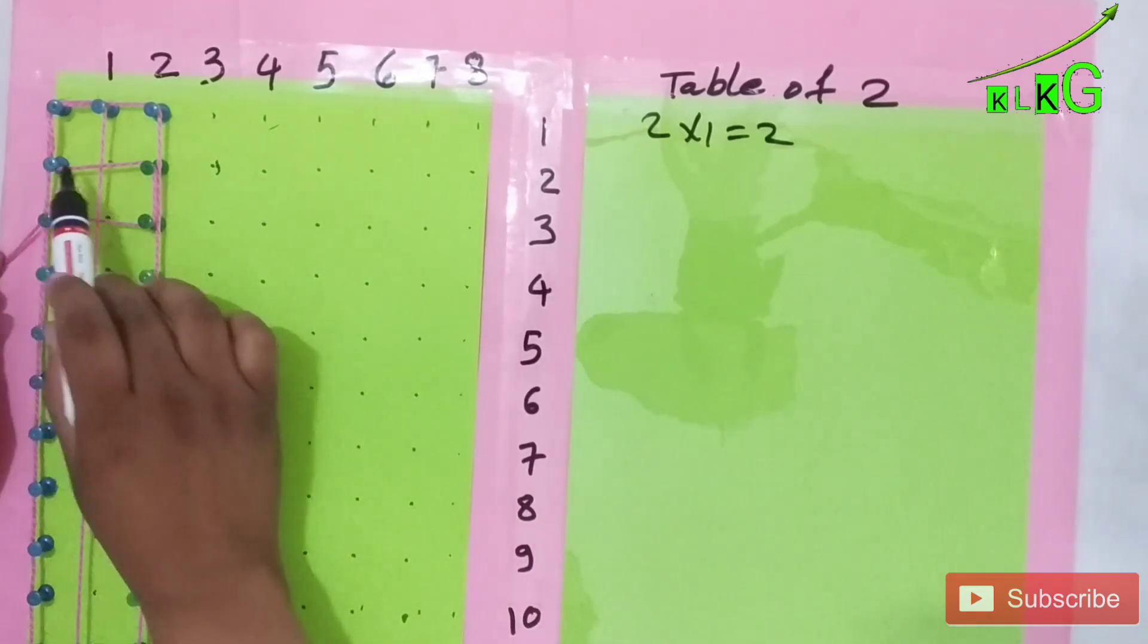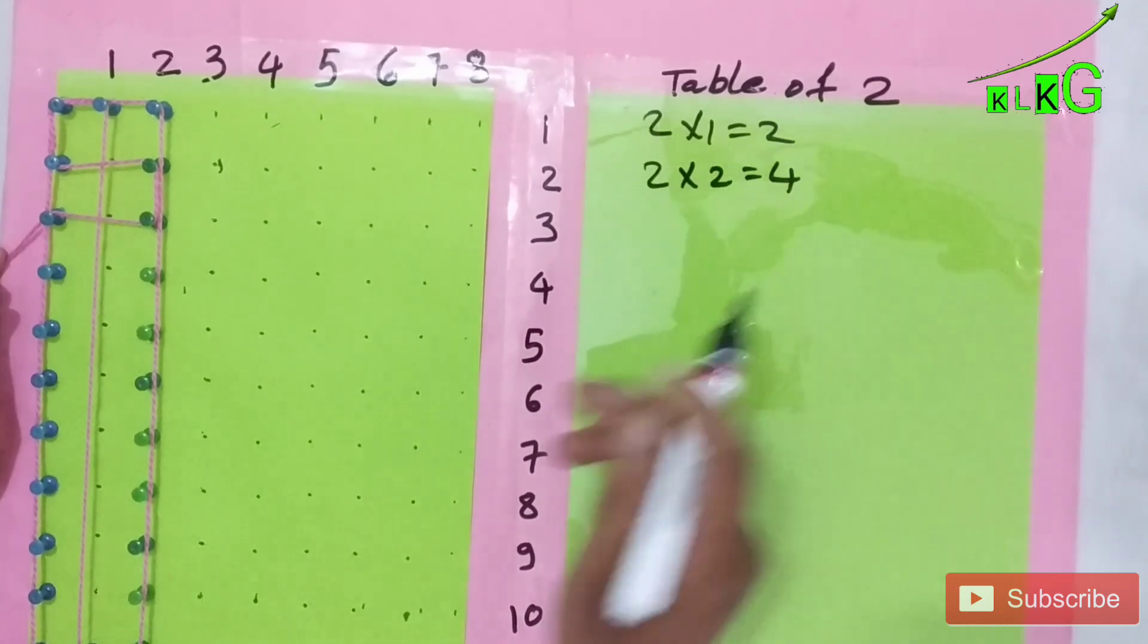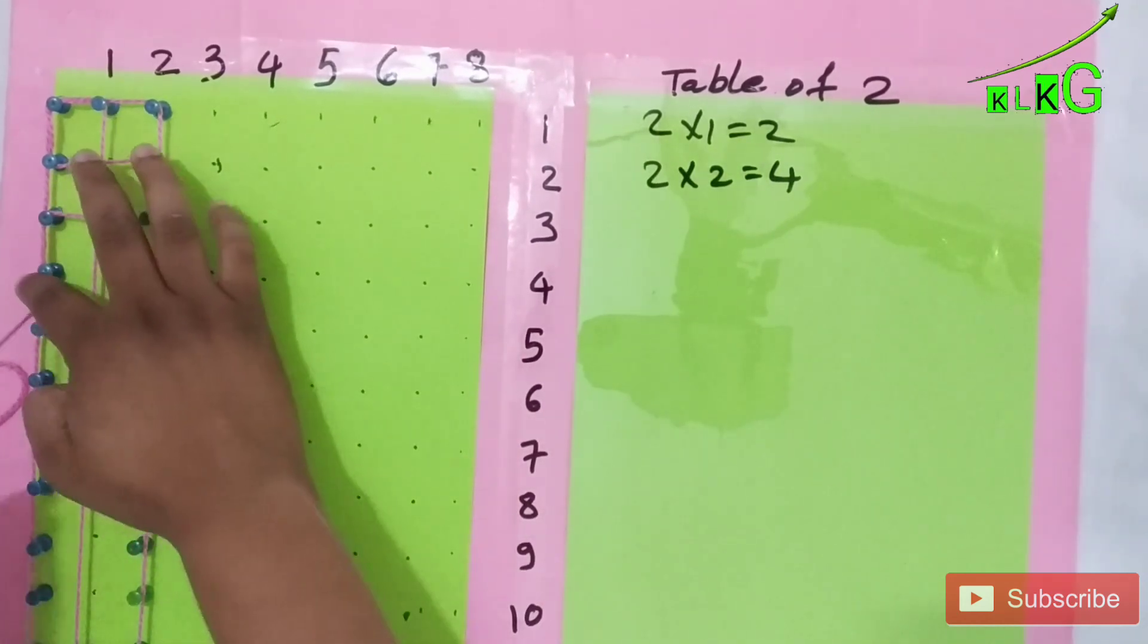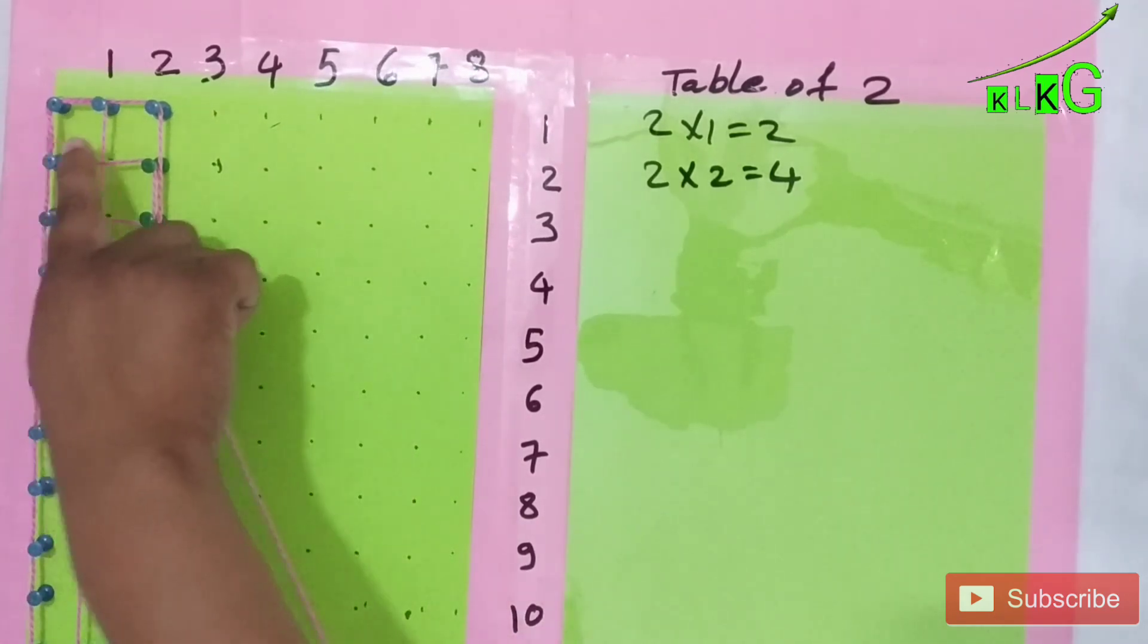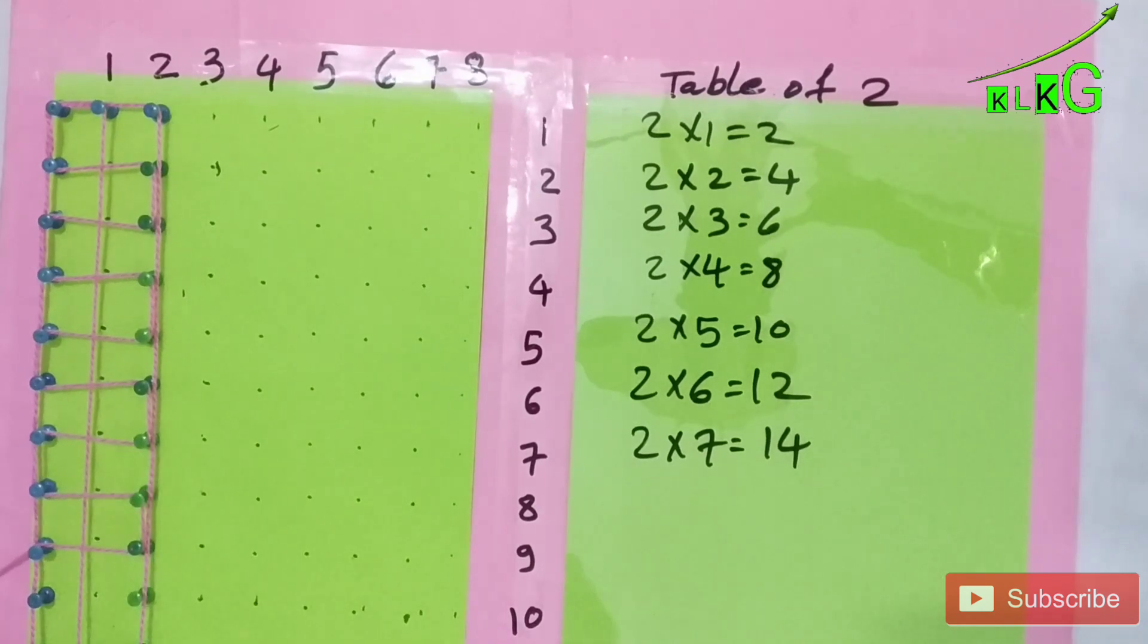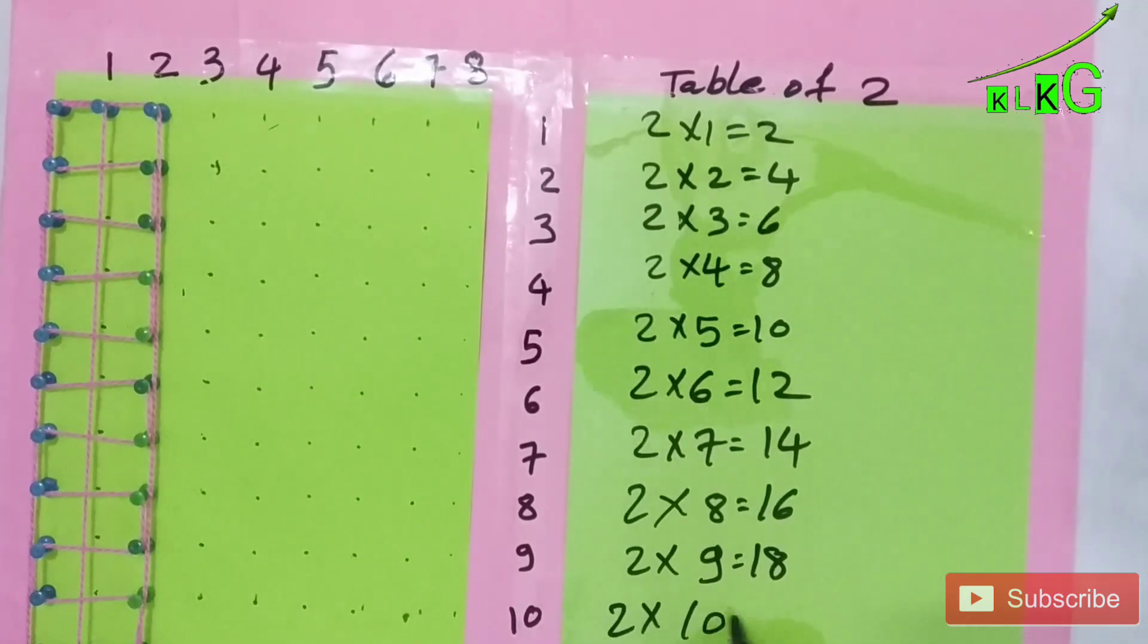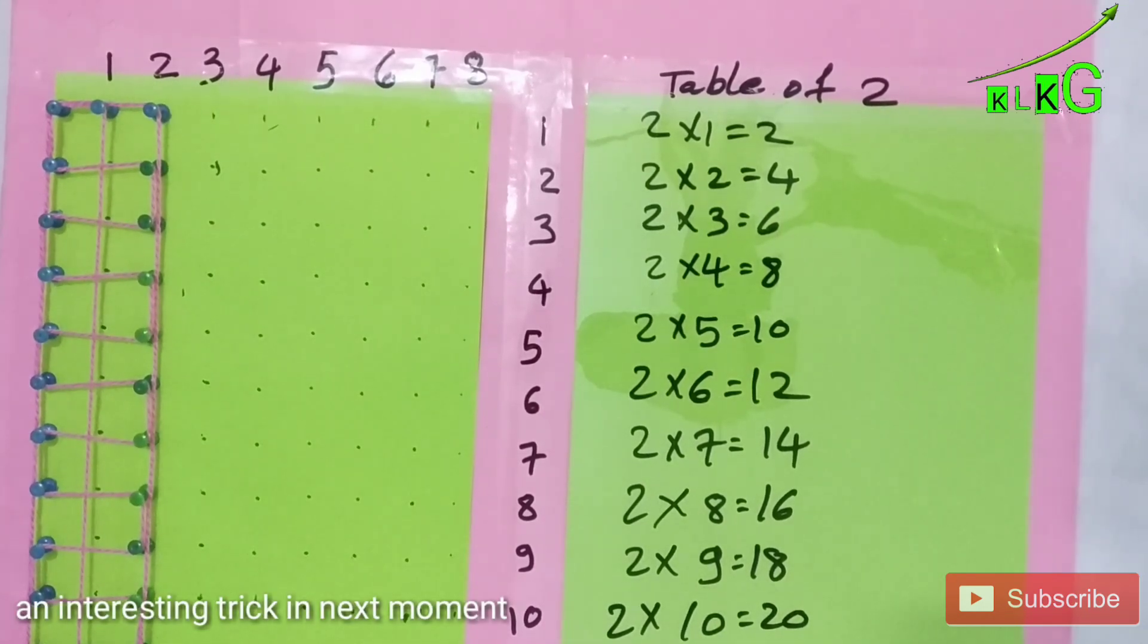Now if we take like this, we are going to see the answer of two twos, right? So two times two is four, two times three is six. We can count them, six blocks are there. So this way you can teach your students, your child to make table of two. Isn't it very easy? I hope it will be fun for them.